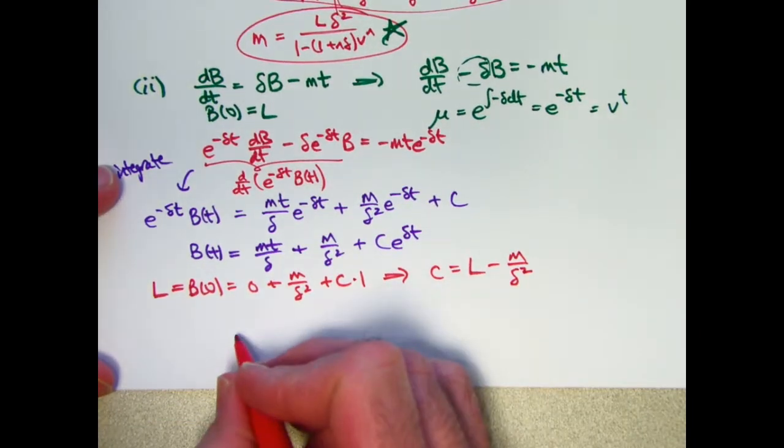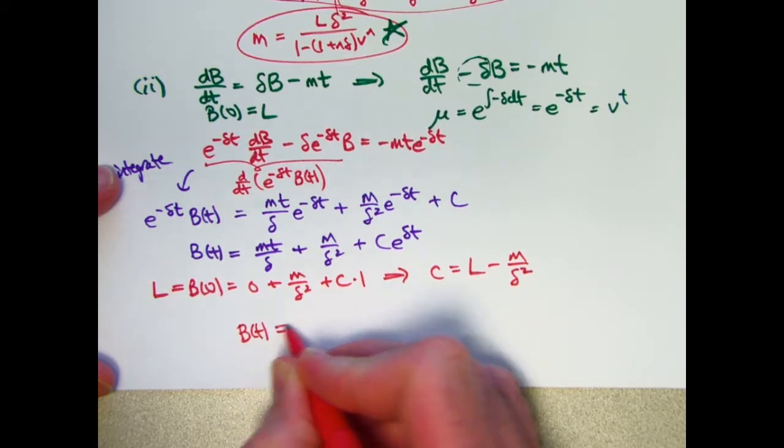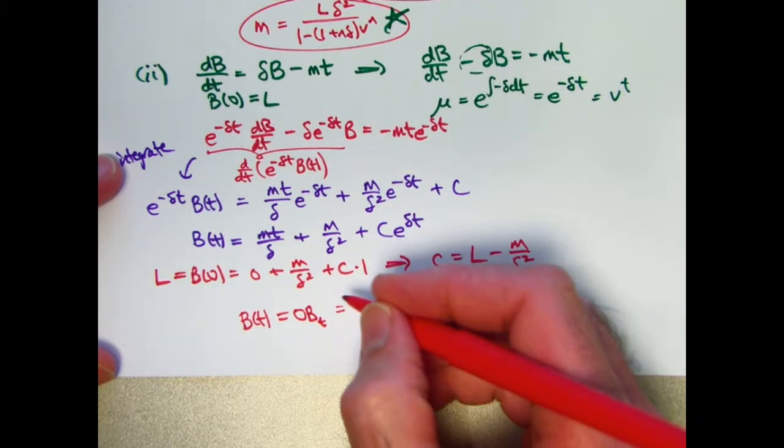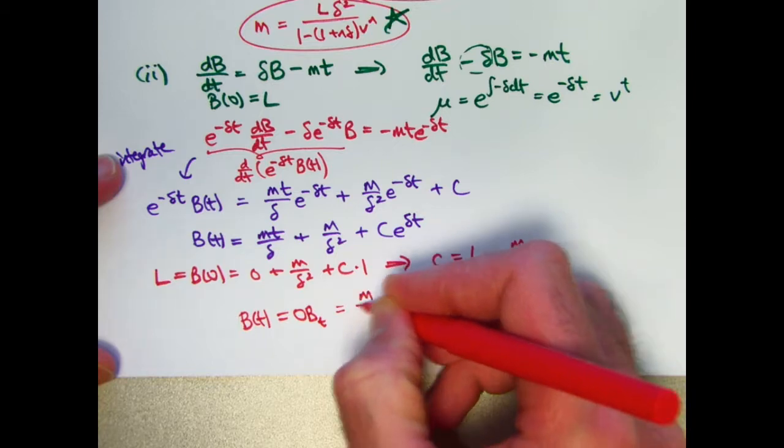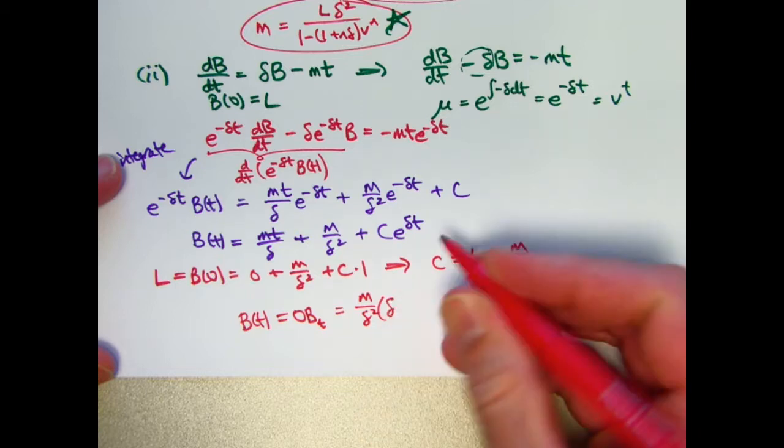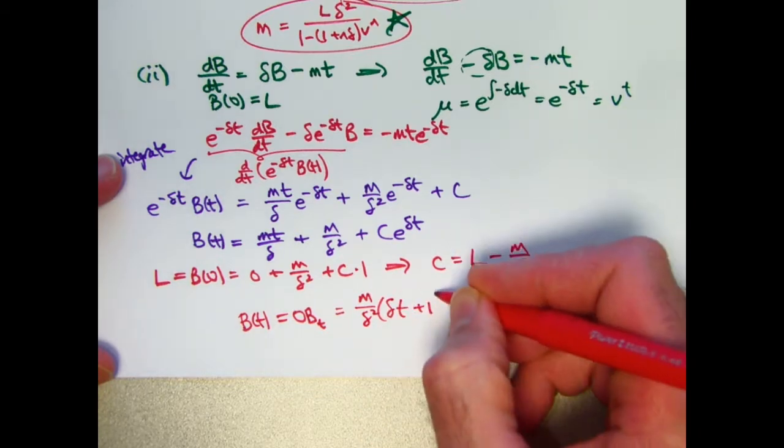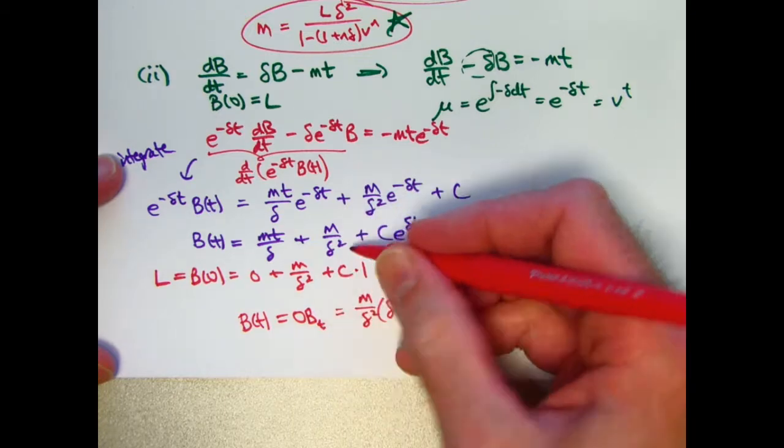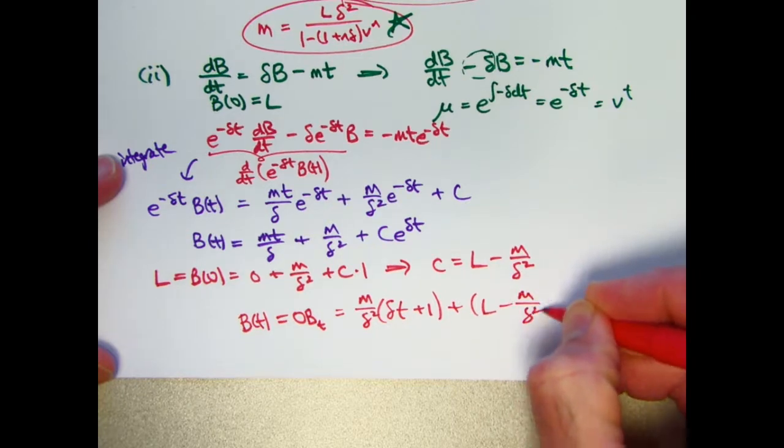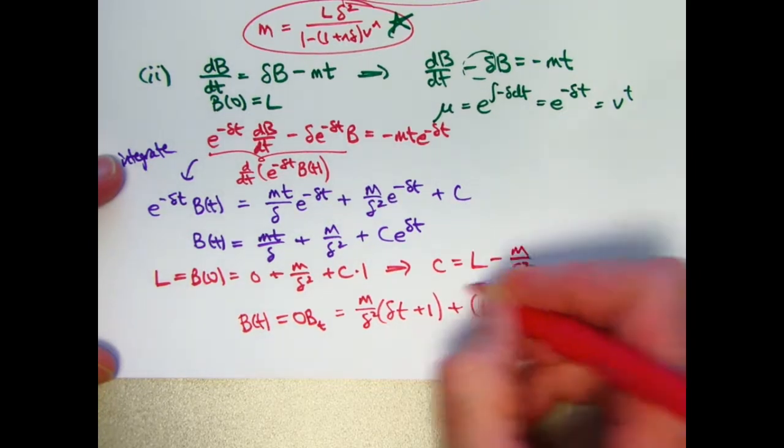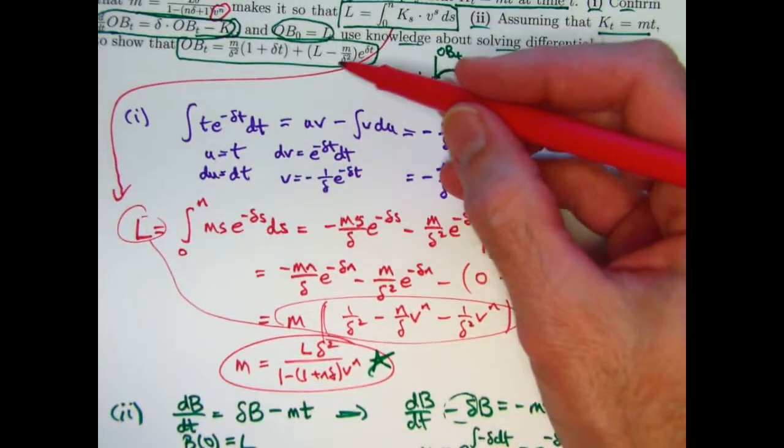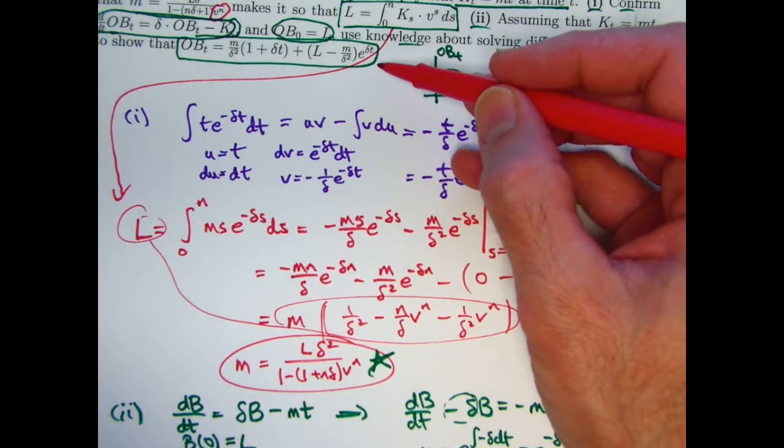And now I can write my particular solution to the initial value problem, B of T, which again is the same as OB sub T. Out of these two terms, I can factor M over delta squared out. If I do that, I'm left with a delta T plus 1. And then I got C, which is L minus M over delta squared times E to the delta T. And looking up here, I hope I didn't make a mistake. It is the same as this function, and yes, no mistakes this time. Okay, that looks good.